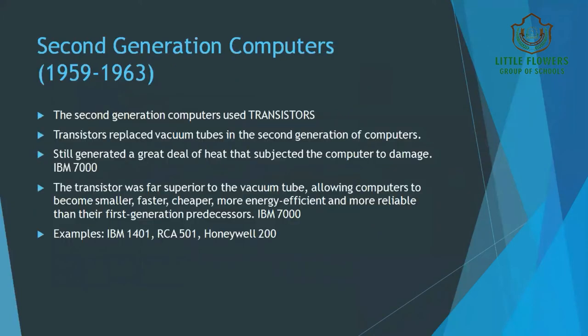Now we move to the second generation of computers. The second generation started in 1959 and ended in 1963. These computers used transistors, which replaced the vacuum tubes. Still, they generated a great deal of heat that subjected the computer to damage. The transistor was far superior to the vacuum tube, allowing computers to become smaller, faster, cheaper, more energy efficient, and more reliable than first generation computers.